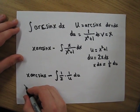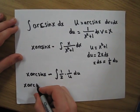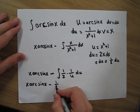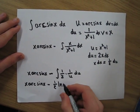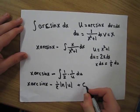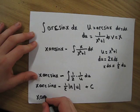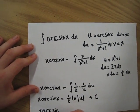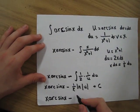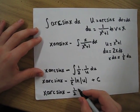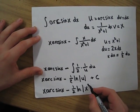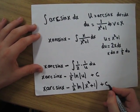This becomes x arcsine x minus 1 half times the natural log of the absolute value of u plus C. Now we substitute back in x squared plus 1 and get x arcsine x minus 1 half natural log of the absolute value of x squared plus 1 plus C.